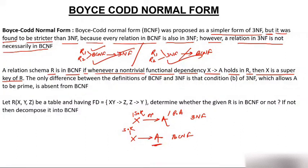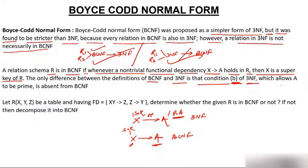Because of this, if a table is in BCNF, it satisfies the BCNF property, which is also a requirement of 3NF. So if a table is in BCNF, it is 100% in 3NF. But if a table is in 3NF due to the prime attribute condition, that condition is absent in BCNF. So a table in 3NF may or may not be in BCNF. The only difference is the absence of the prime attribute condition in BCNF.